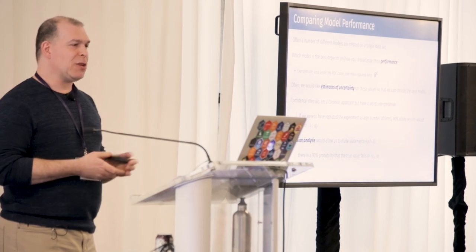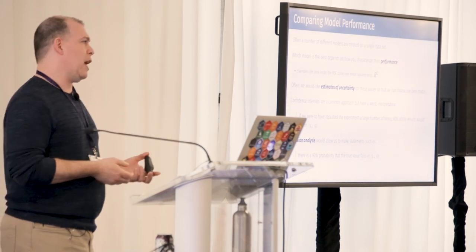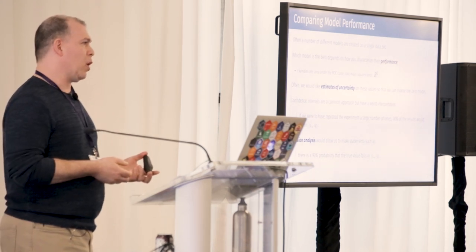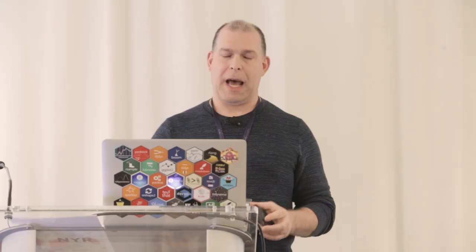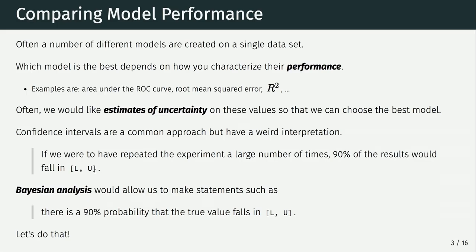So a lot of times what we want to do is put estimates of uncertainty on this, like a confidence interval on the R-squared, so that we can say these two things are really different or they're not. But the problem is you have one data set, and for the most part, unless you're going to do some bootstrapping and things like that, it's really hard to put estimates of noise on these things.